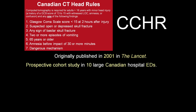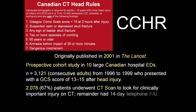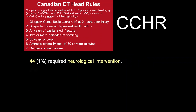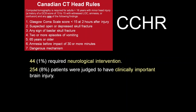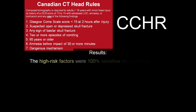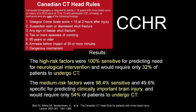It was a prospective cohort study in 10 large Canadian hospital emergency departments with roughly 3,000 patients between 1996 and 1999 presenting with a GCS between 13 and 15 after head injury. About two-thirds underwent CT scan. 1% required neurosurgery, an additional 8% were judged to have clinically important brain injuries. The high-risk factors are 100% sensitive predicting the need for neurologic intervention, requiring only approximately one-third of patients to undergo CT. The medium-risk factors are 98.4% sensitive and roughly 50% specific for clinically important brain injury.